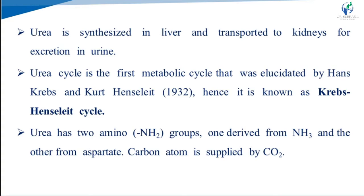Urea has two amino groups: one derived from ammonia and the other from the aspartate moiety. The carbon atom is supplied by a carbon dioxide molecule. The structure of urea contains one ketone group and two amino groups — one amino group derived from ammonia, synthesized from transamination and deamination reactions, and the other from the aspartate moiety. The carbon atom is supplied by carbon dioxide.